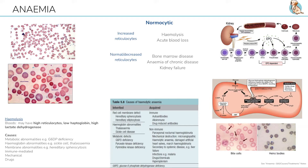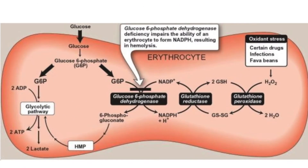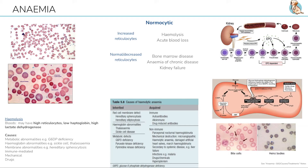There are lots of causes for hemolysis. Metabolic abnormalities such as G6PD deficiency — a lack of this enzyme leaves the red cell prone to oxidative stress and destruction. Haemoglobin abnormalities such as sickle cell or thalassemia can also cause this. Others include membrane abnormalities such as hereditary spherocytosis, immune mediated, mechanical destruction, or even some drugs.